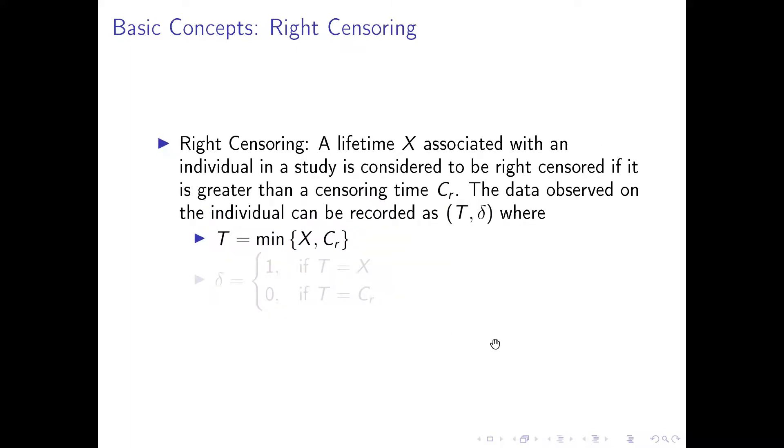And so here I'm going to quickly go over the predominant form of censoring, right censoring. A lifetime X is a measure of time to event associated with an individual. In this study, it does not have to be an individual, but a case or a subject. Sometimes it could be machinery. It is considered to be right censored if it is greater than a censoring time C_r. The data observed on the individual can be reported as (T, Δ), where T is the minimum of either the time to event or the censoring time.